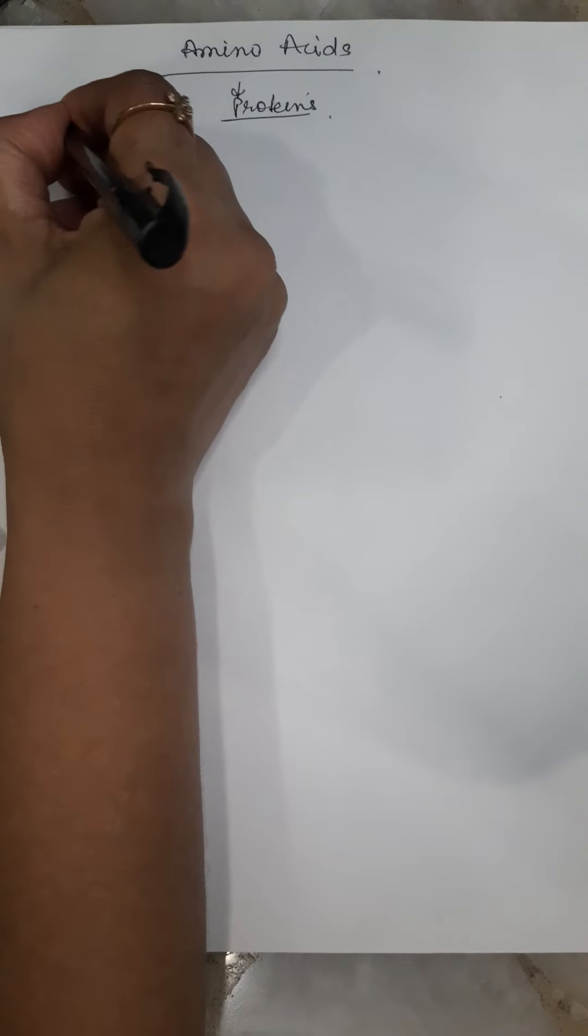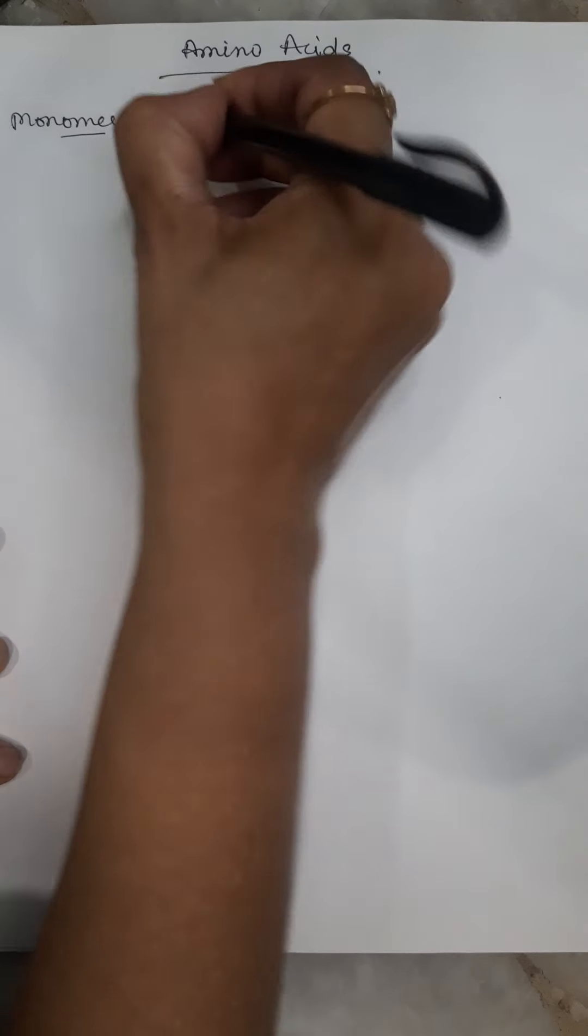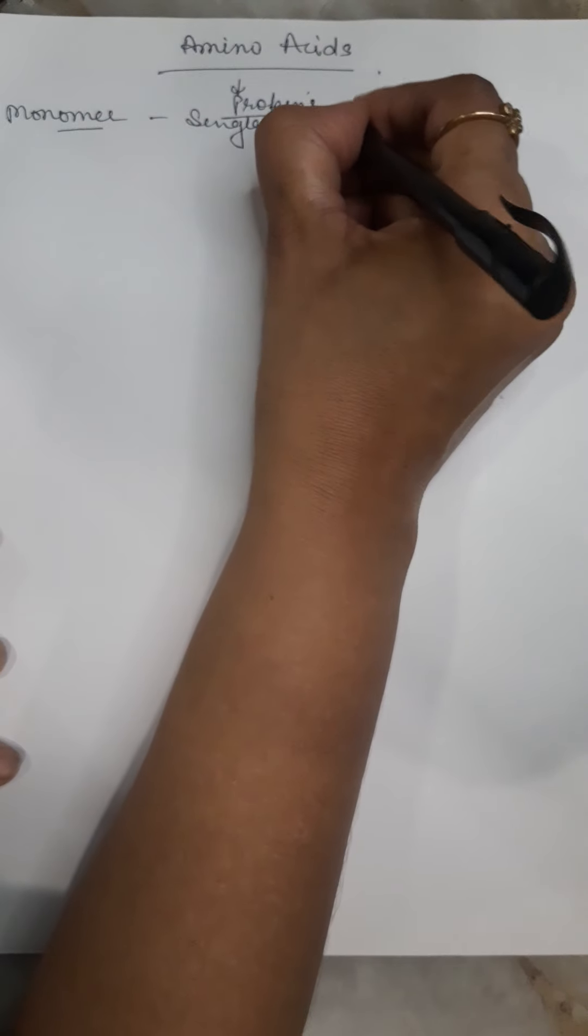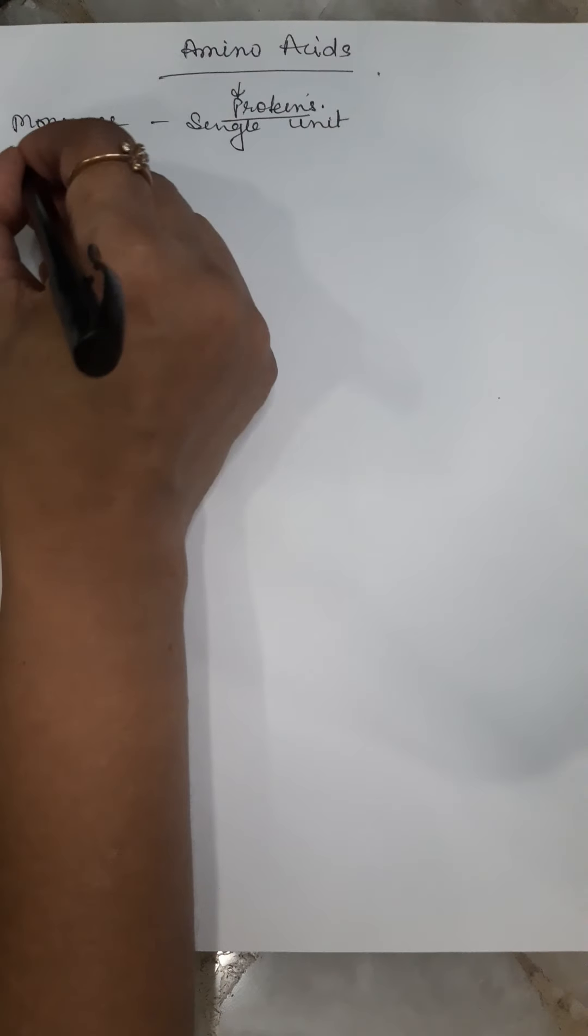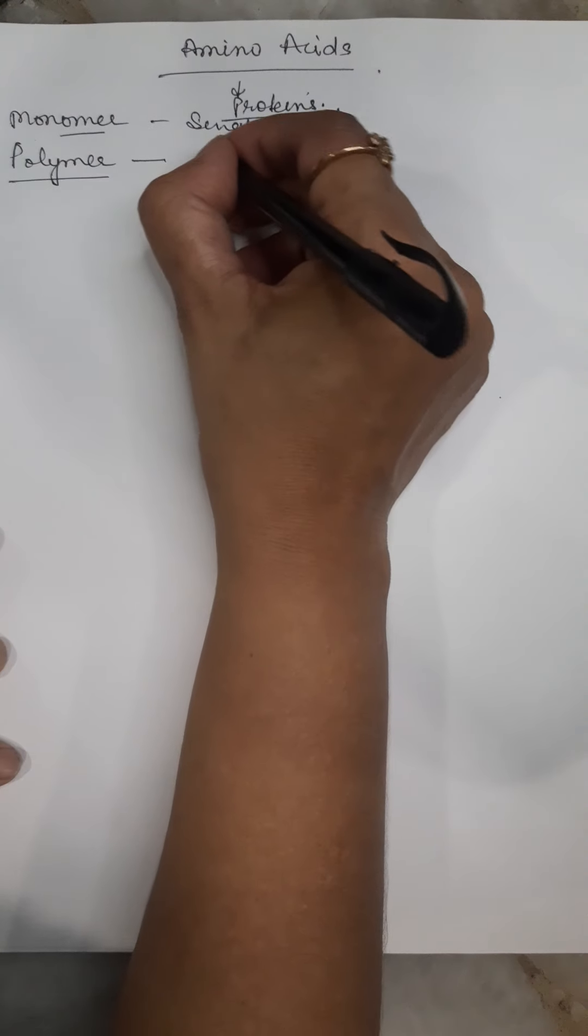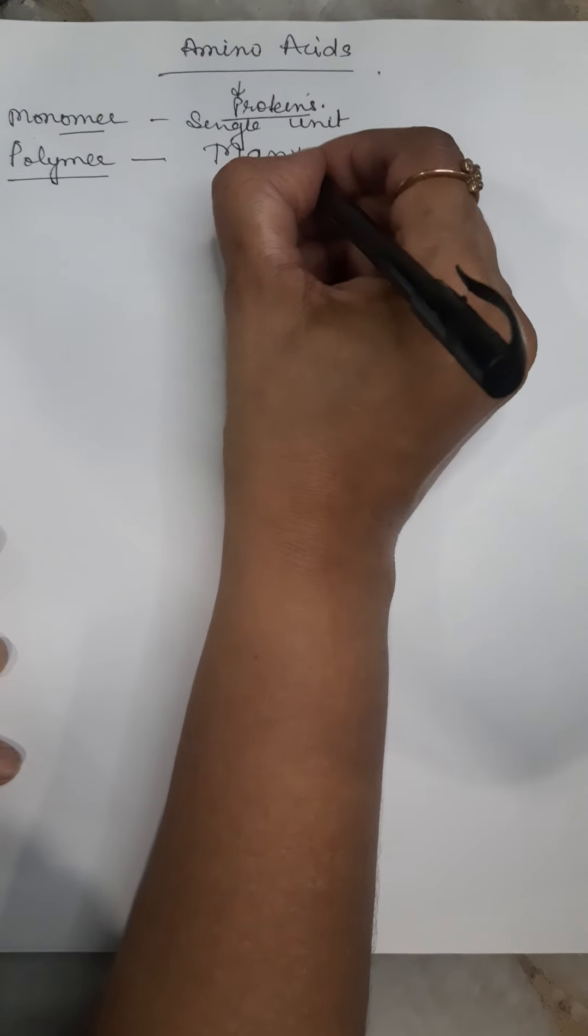Monomer means a single unit, and a polymer is many such single units that combine to form a polymer.